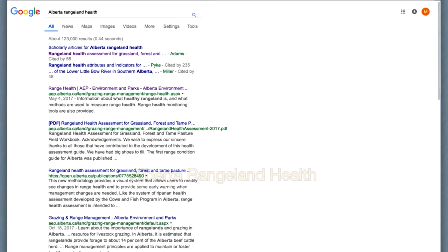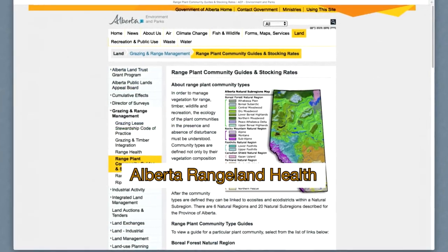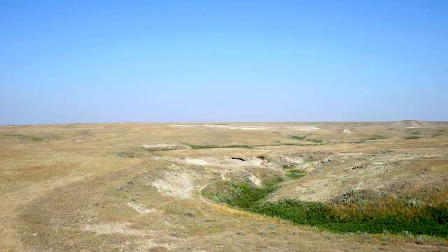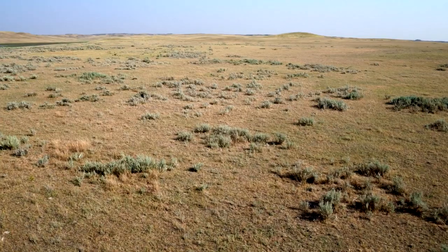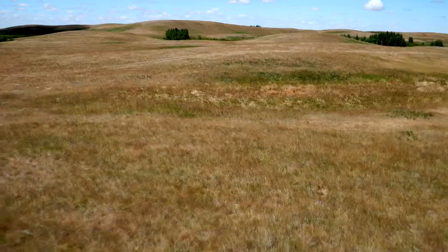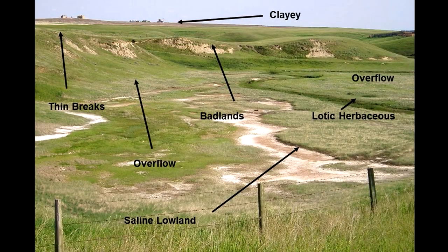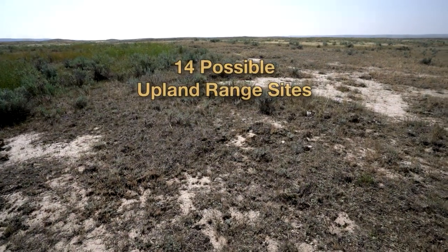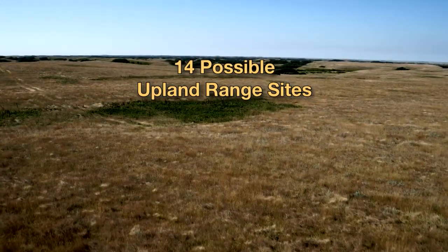They are easy to find on the web — just Google 'Alberta rangeland health' and you will find them. Range plant communities in the prairie region are defined for every major soil or range site type, which are named by very recognizable qualities like loamy, blowout, badlands, overflow, and so on. There are 14 possible upland range sites.